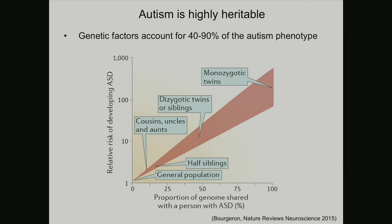If you are a fraternal twin or a sibling and you share about 50% of your DNA, you have about a 12-fold higher risk of getting autism than the general population. And if you are monozygotic — an identical twin — you have 100% of your genome shared and over a 100-fold risk. That's evidence that this is highly heritable and that genetic factors are very important.